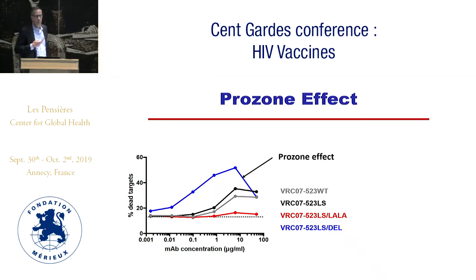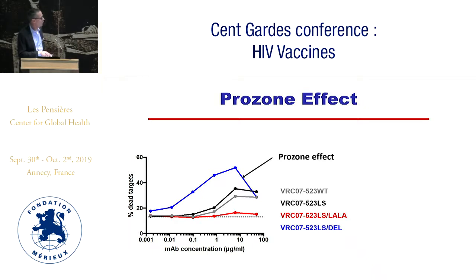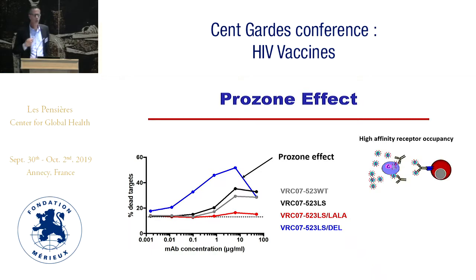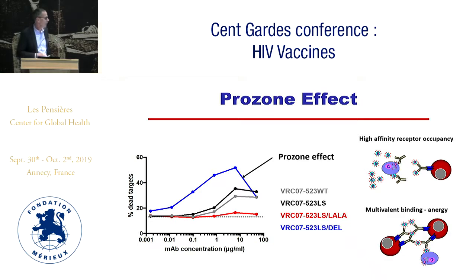Maybe what we're seeing is an in vivo prozone effect. For those who have done ADCC assays, the prozone effect is that when you go to higher and higher concentrations of antibody, you often see a decrease in the killing effect. This prozone effect is really augmented with the DEL antibody. The thought is that if you've got high affinity receptor occupancy on your NK cell, and excess antibody binding to your target cell, with plasma virus also bound, the NK cell can't recognize the target cell because everything's already bound up. Or there's multivalent binding with free plasma virus preventing actual delivery of the killing signal to the target cell.